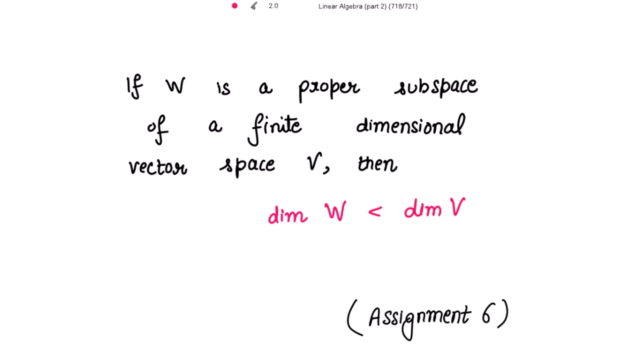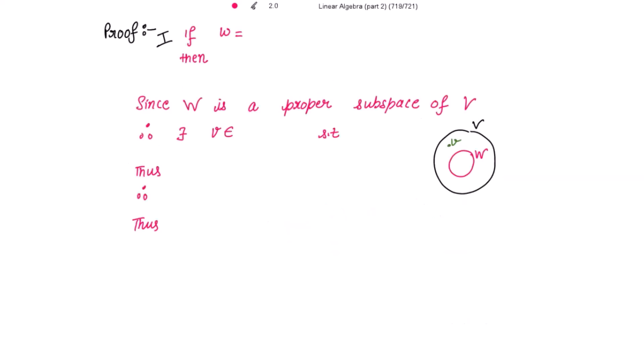Assignment 6 — this is also a very important corollary. If W is a proper subspace of a finite-dimensional vector space V, then the dimension of W is strictly less than the dimension of V. We will prove this.